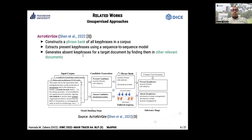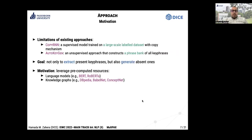We identified some limitations of existing state-of-the-art approaches. For example, supervised CopyRNN requires a large-scale labeled dataset to train the keyphrase model efficiently, and also employs a copy mechanism for this task.